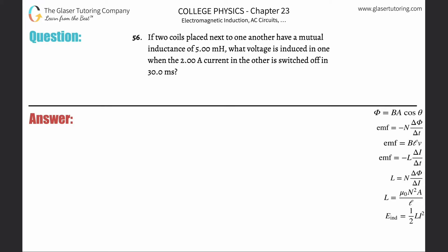Number 56. If two coils placed next to one another have a mutual inductance of 5 millihenries, what voltage is induced in one when a 2 amp current in the other is switched off in 30 milliseconds?